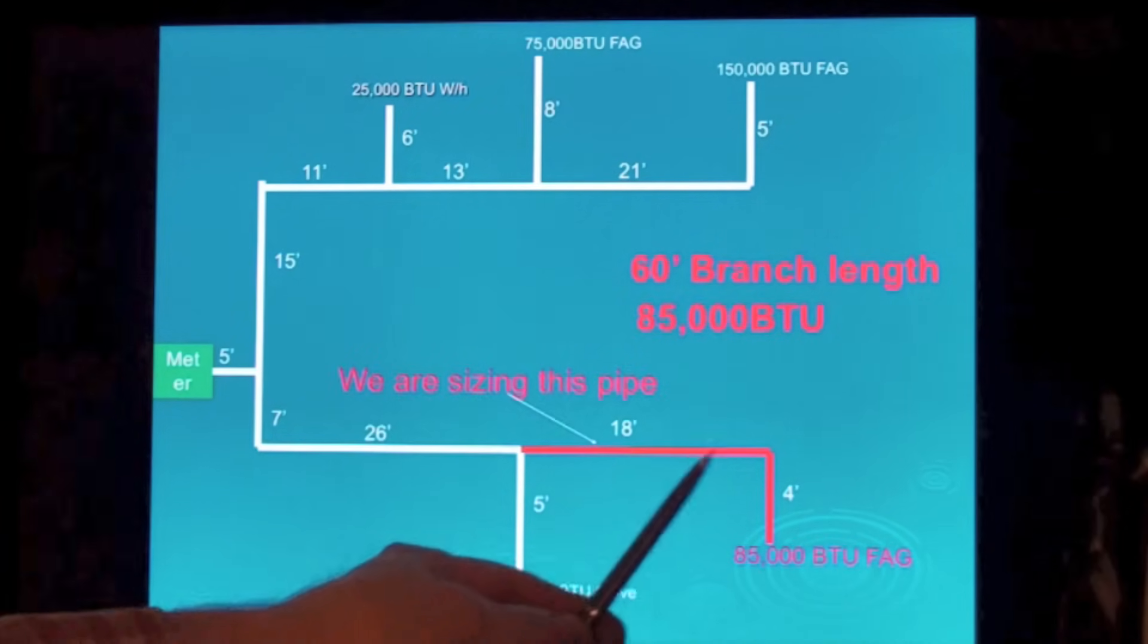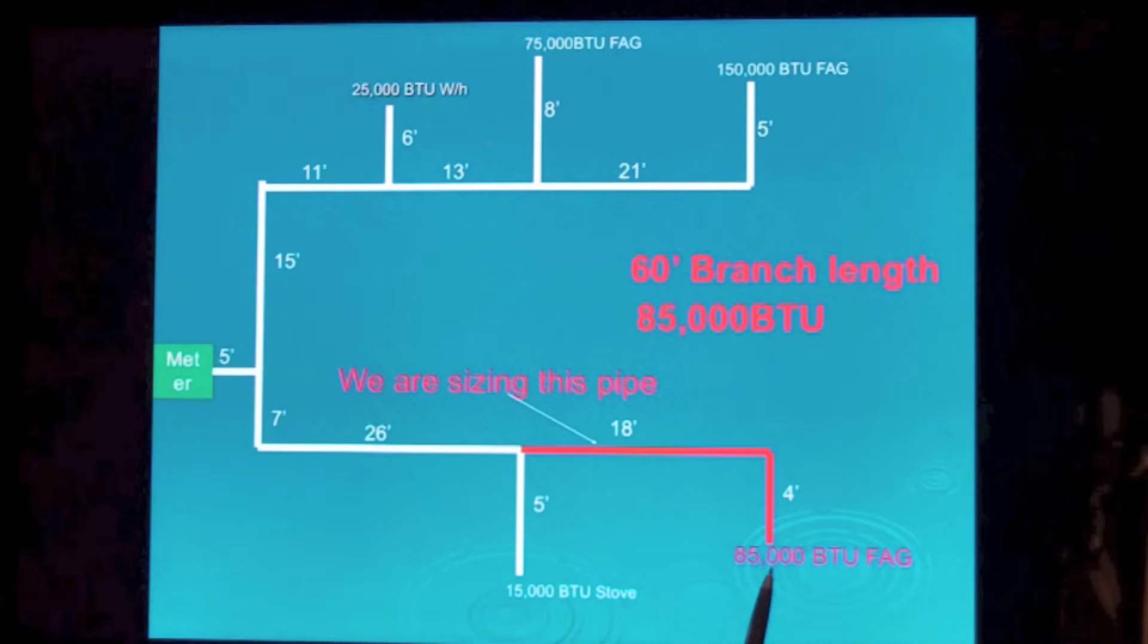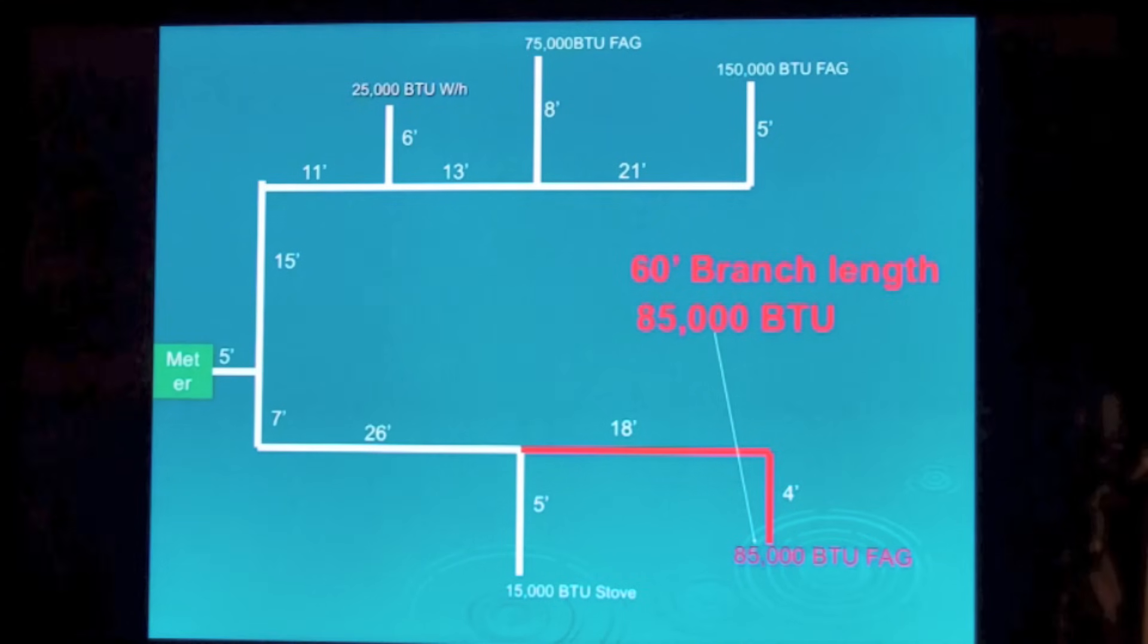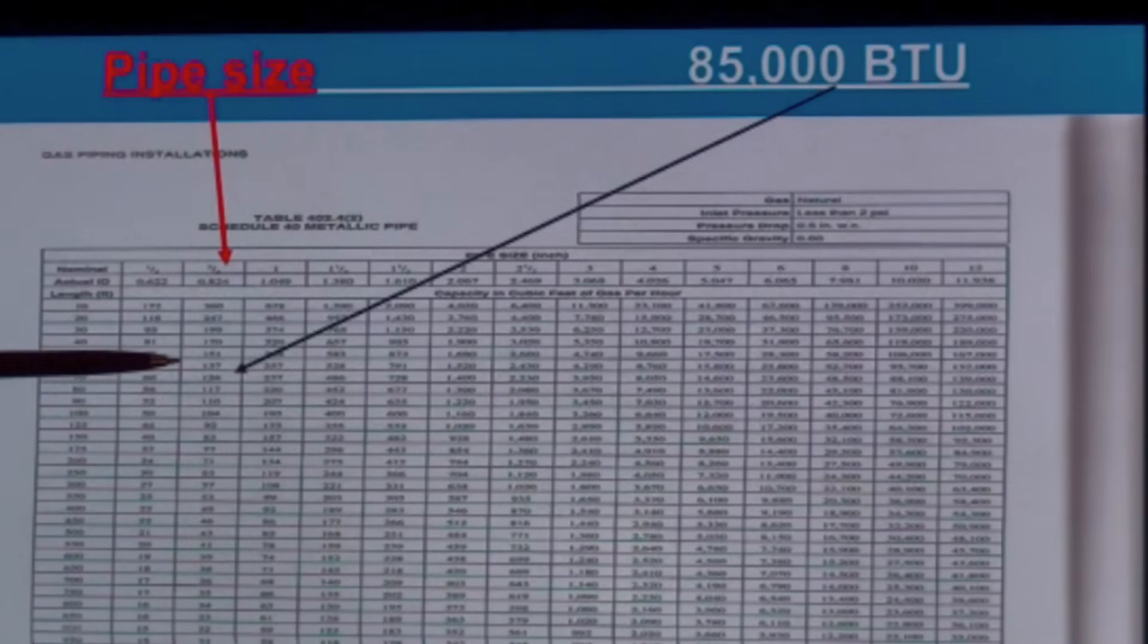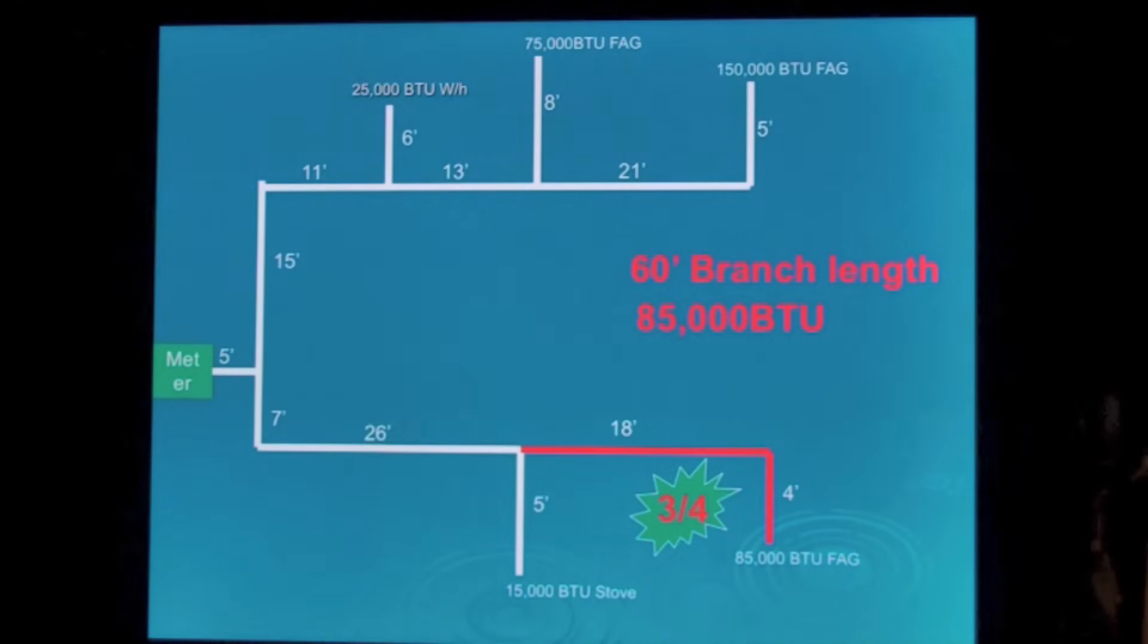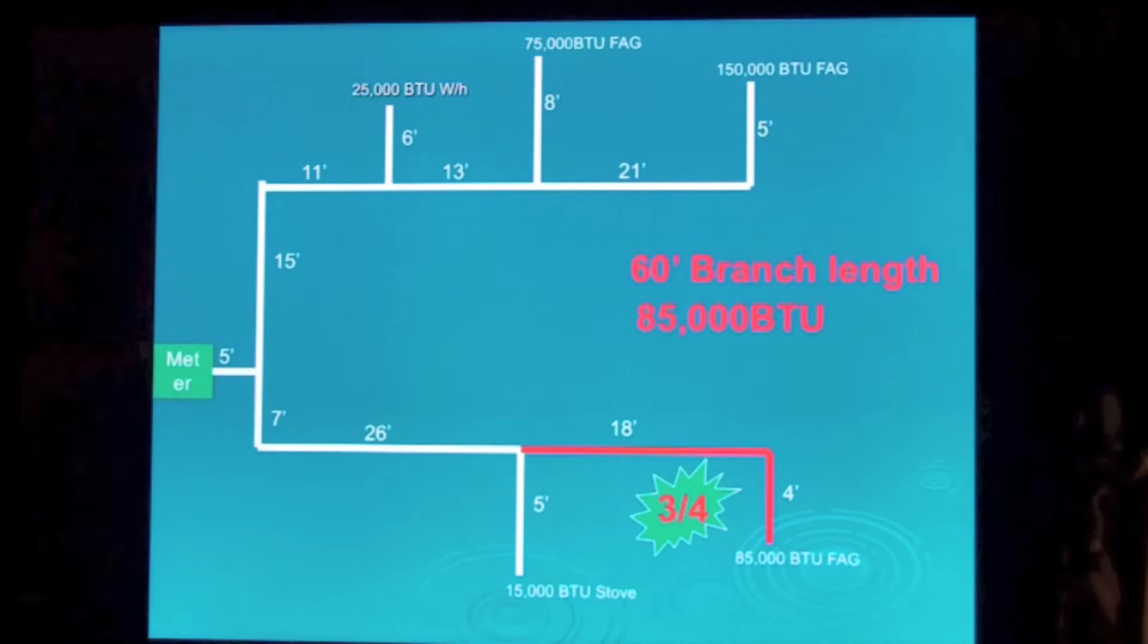Now we're going to size this pipe. 60 foot branch length. There's only one appliance on there and it's 85,000 BTUs. Here we go. I'm still on my 70 here, but it's a 60 foot branch length. We've got 85,000 BTUs. Three quarters will do it, but half inch won't because half inch is 65. So now we know three quarter is the pipe for the last one.